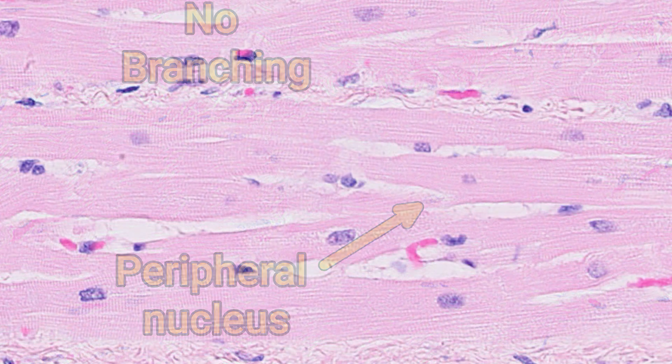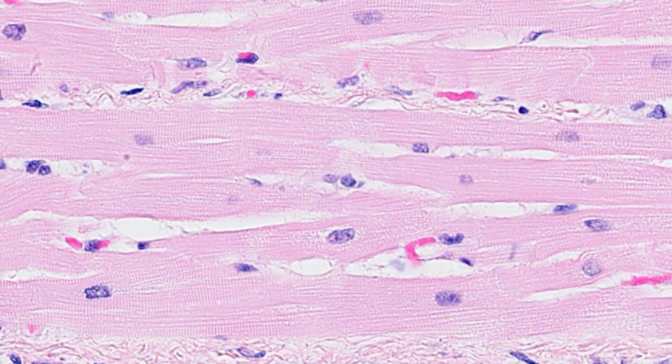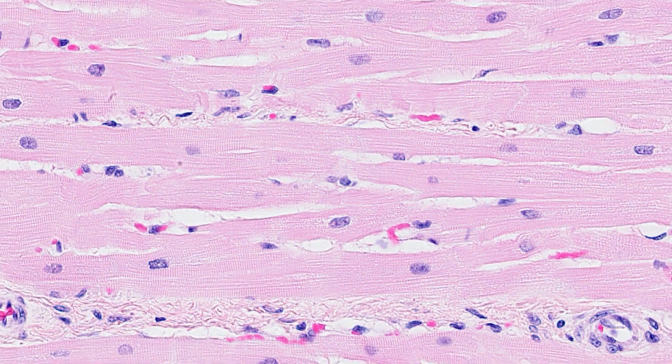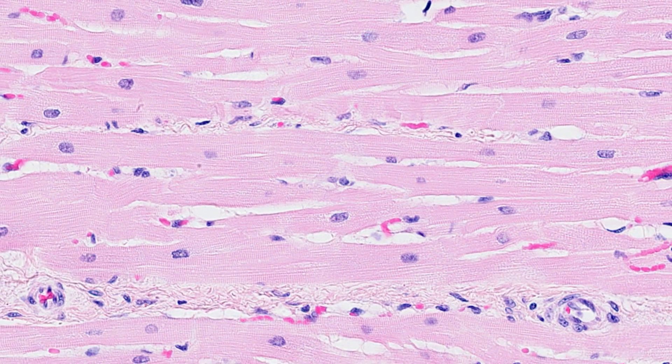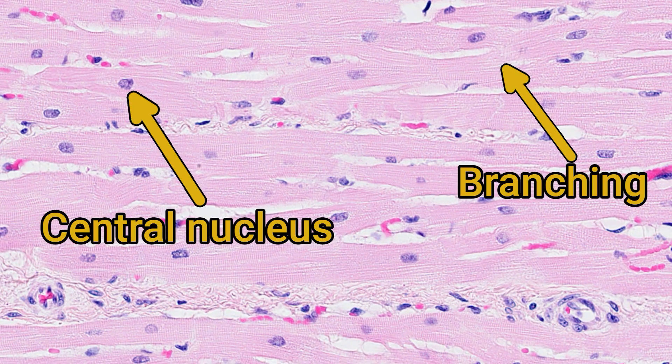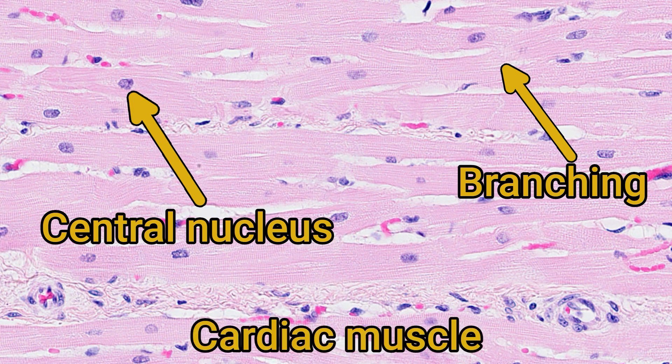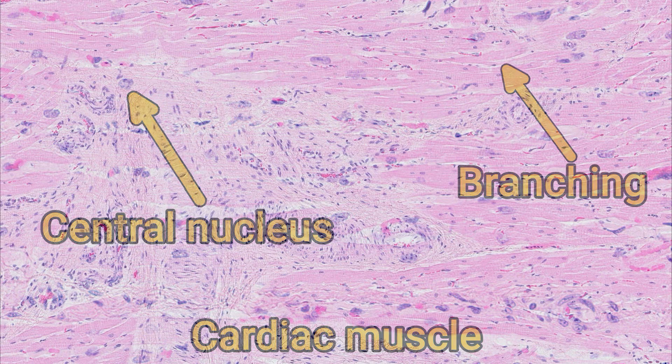If you can spot either of those features — a central nucleus or branching between myocytes — you should be able to tell the difference between skeletal and cardiac muscle even without the wider context of an entire organ section.